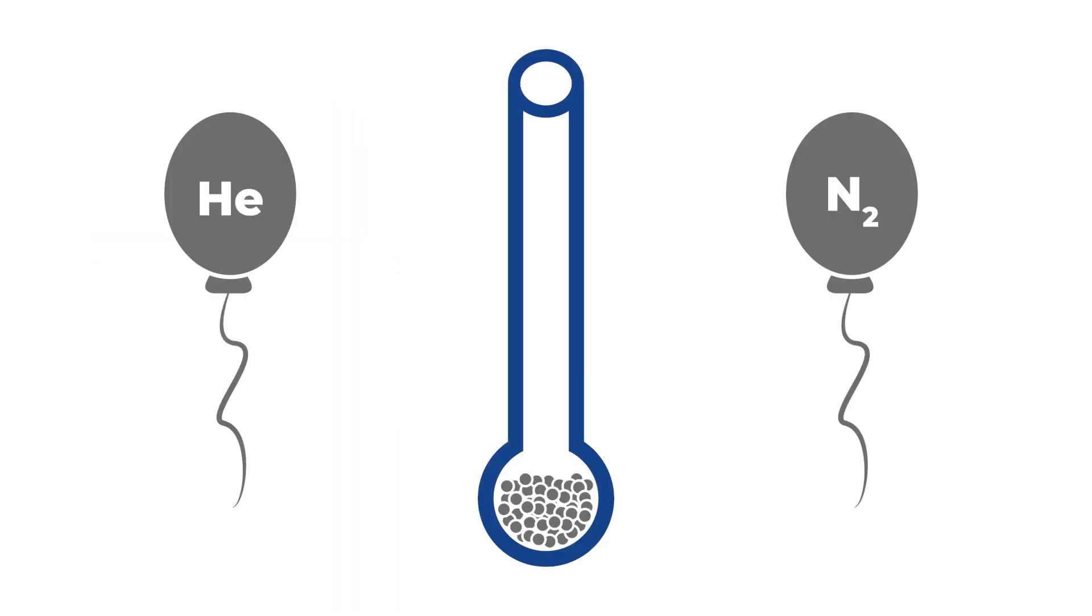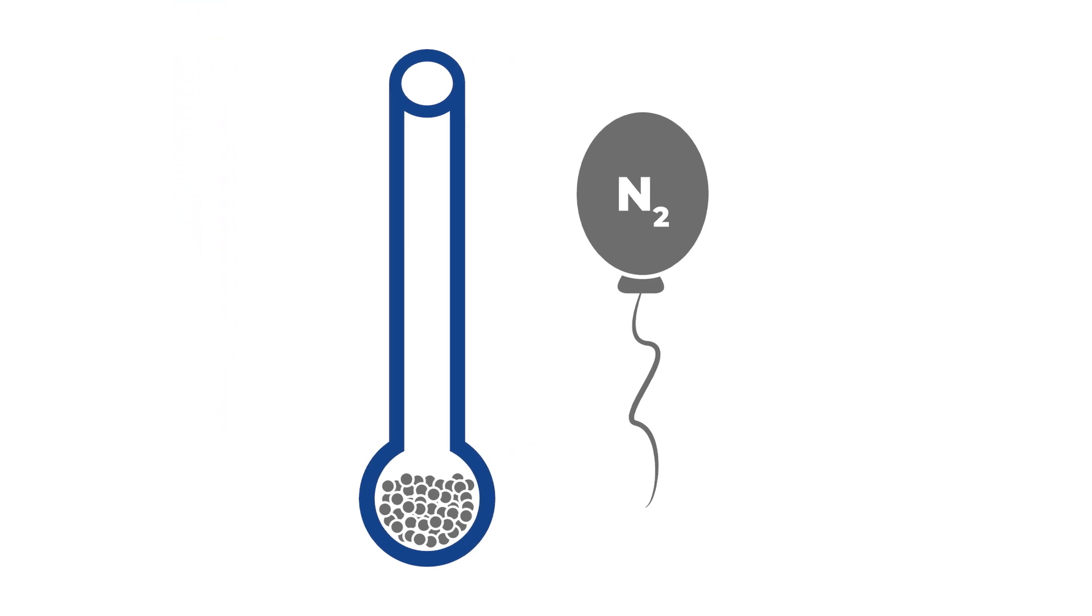Also, if the sample is being backfilled with helium after the degas, the buoyancy effect of helium on the sample tube mass should be considered. It is best to backfill with nitrogen to account for the empty tube mass that was filled with atmospheric gases.